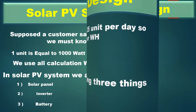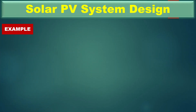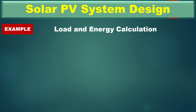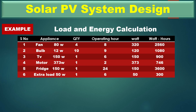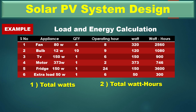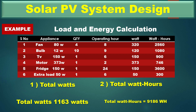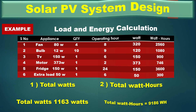In solar PV system design, we are calculating three things: number one, solar panel; number two, inverter ratings; and number three, battery. For better understanding, let's see an example. We have different appliances — motors, fans, TV, refrigerator — and we know their peak power, quantity, and operating hours. When we calculate these values, we get total wattage of 1163 watts and total energy of 9186 watt-hours.